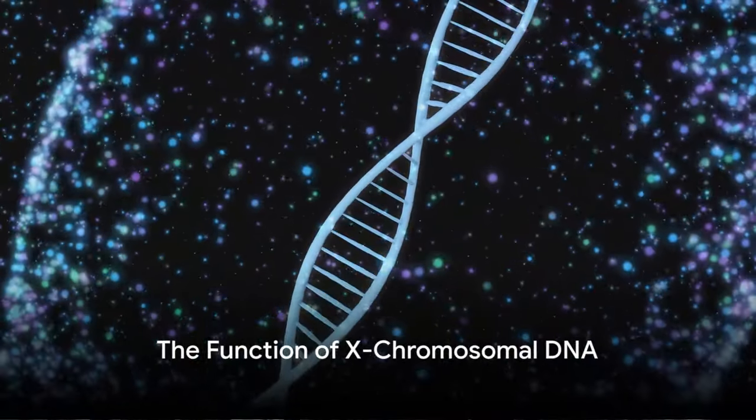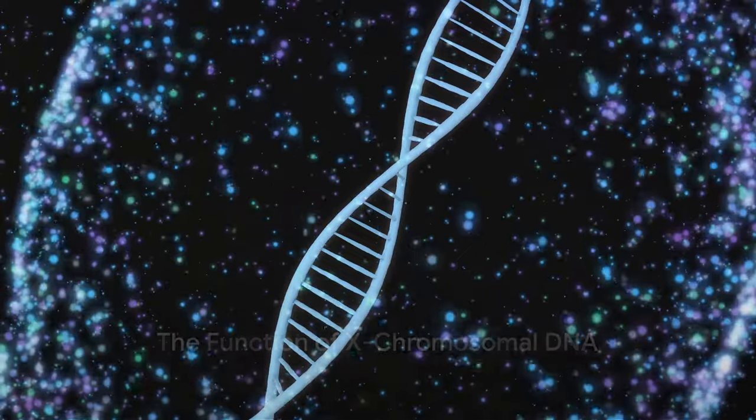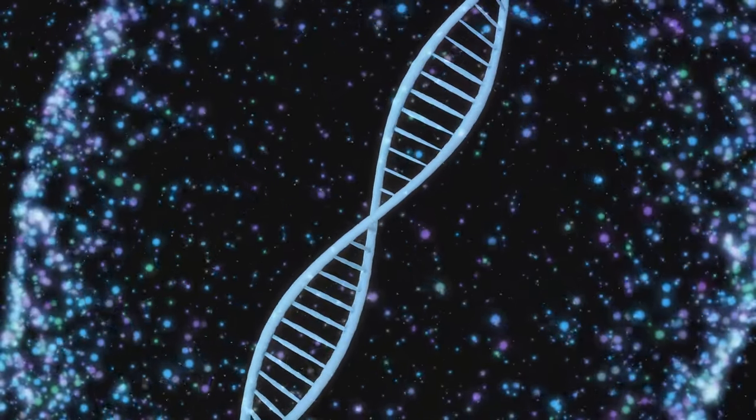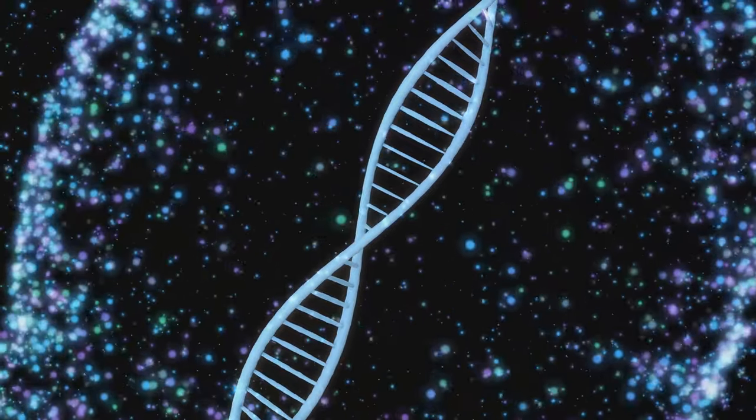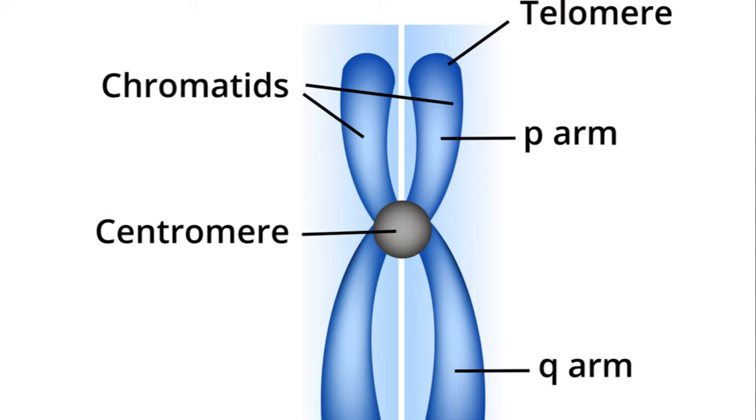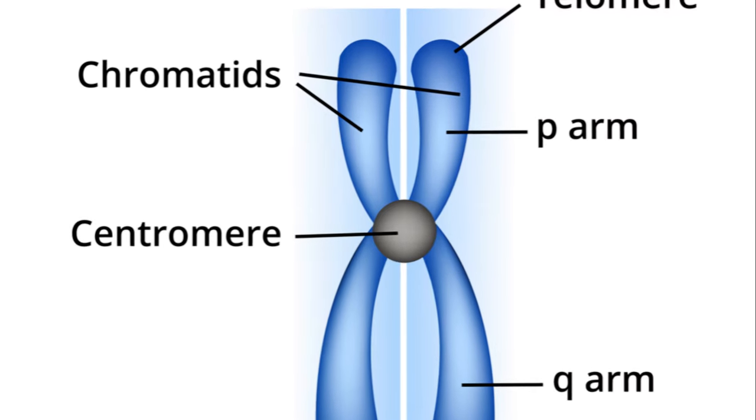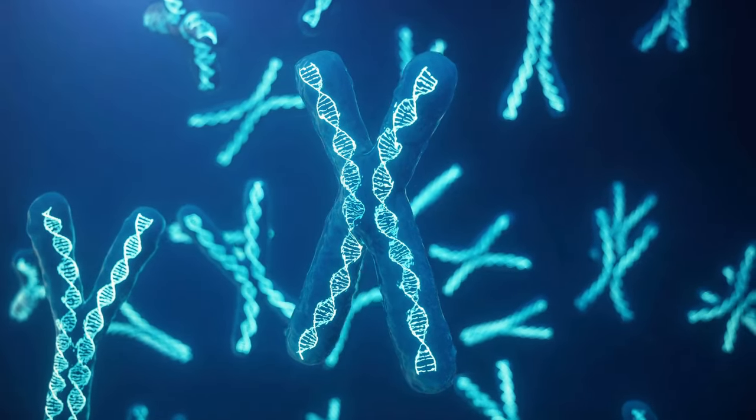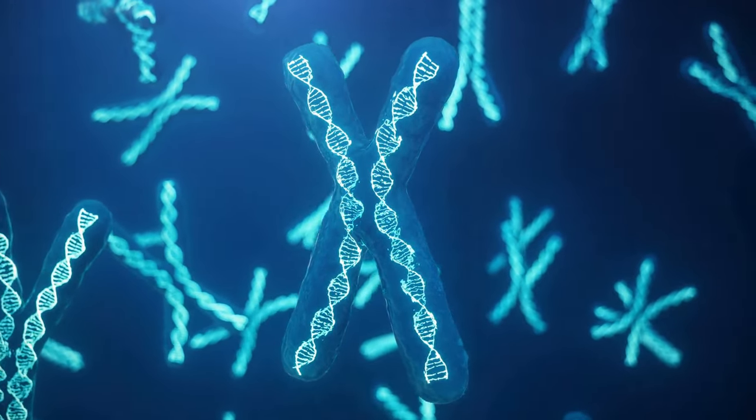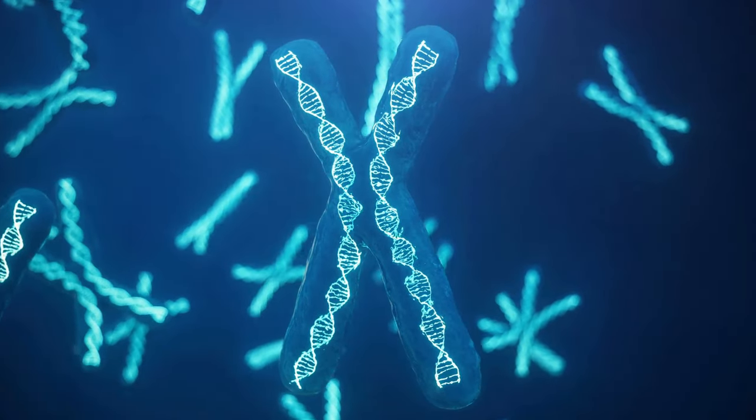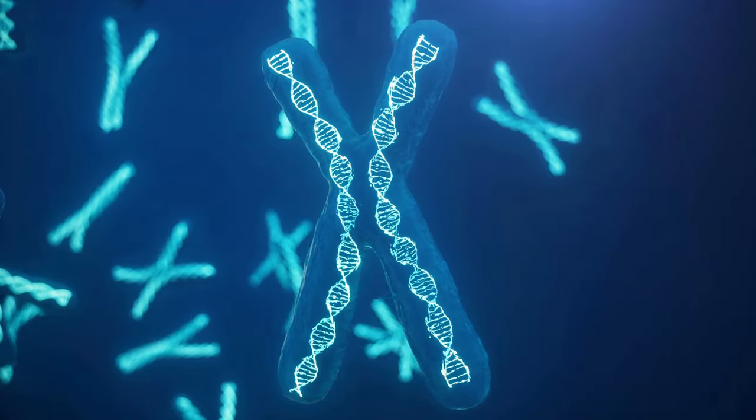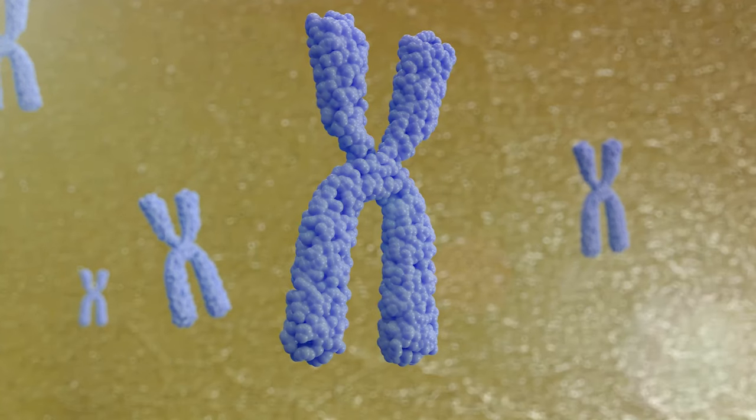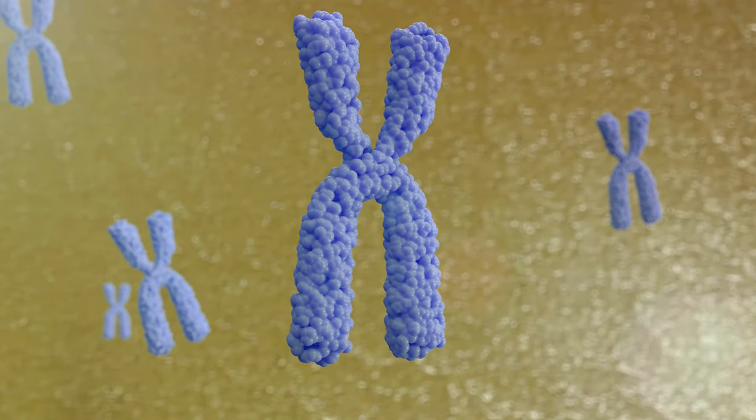But what exactly does the X-chromosomal DNA do? Well, it serves as a critical player in the symphony of our genetics, carrying out functions that help us navigate the world around us. The X-chromosome, one of the 23 pairs of chromosomes in each cell of our bodies, is a genetic powerhouse. This DNA-packed structure carries approximately 800 to 900 genes. To give you some perspective, the entire human genome is estimated to hold between 20,000 to 25,000 genes.